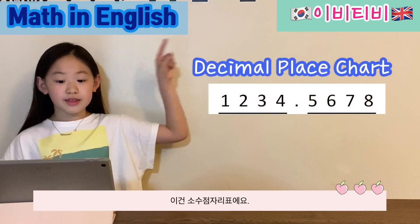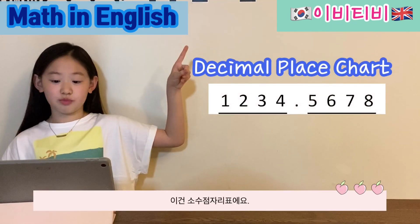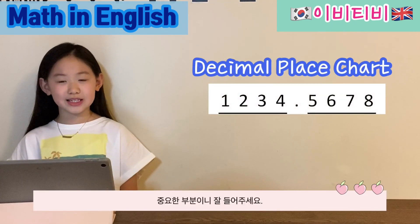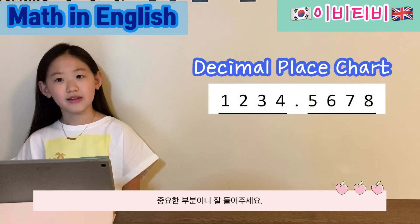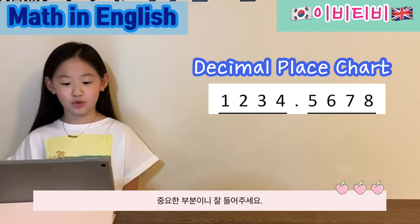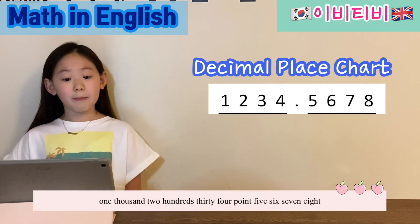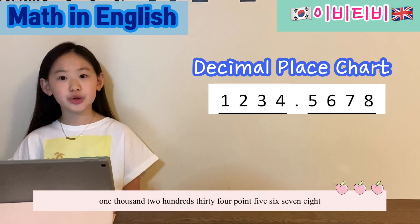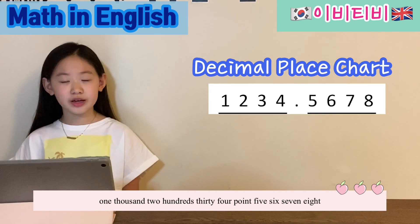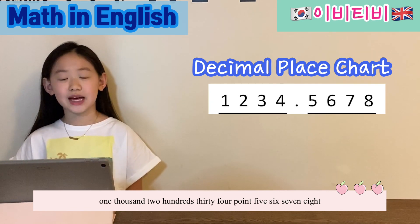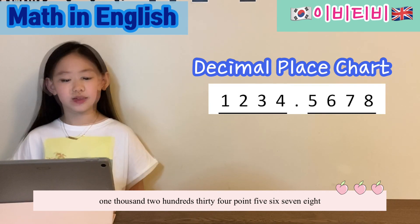This is a decimal place chart. Please listen carefully — this is very important. The number is 1,234.5678.